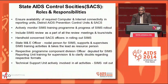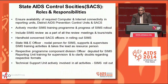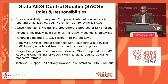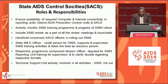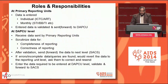Similarly, at the state level, we have to ensure the computer and internet connectivity, and monitoring the training programs that are conducted at various levels. This is also important because not only the initial training but a number of refresher trainings are required from time to time. There is also attrition of staff — people leave or new people join and they need to be trained. We also include SIMS review as a part of all review meetings. States also have to handhold the constituent SACS officers in rolling out the program, and the respective program component divisions are deputed for training and supervision in their respective areas. The technical support unit is also involved in all these activities.